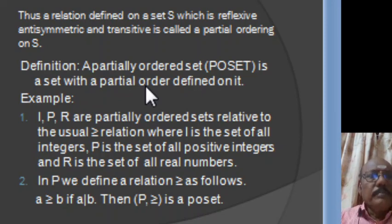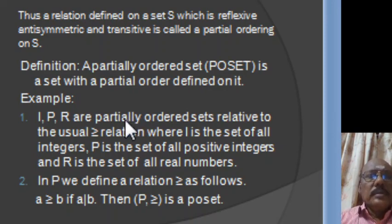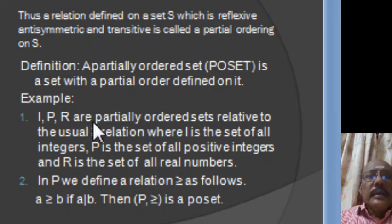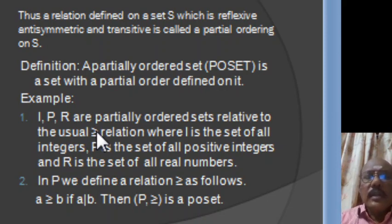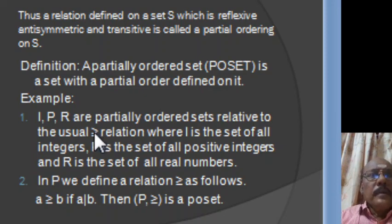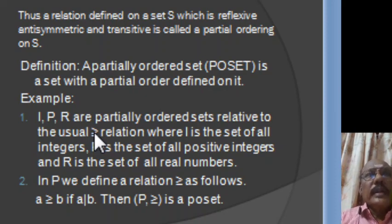Let us give some examples for posets. Let I be the set of all integers, P the set of all positive integers, and R the set of all real numbers. In the set of all integers, we use the usual ≥ relation. We can say A ≥ A, so it satisfies the reflexive property. If A ≥ B and B ≥ A, then certainly A = B, so it is anti-symmetric. And if A ≥ B and B ≥ C, then A ≥ C. So the usual ≥ relation is a partial ordering on the set of all integers.